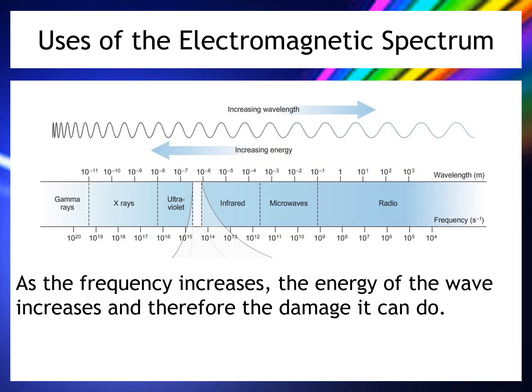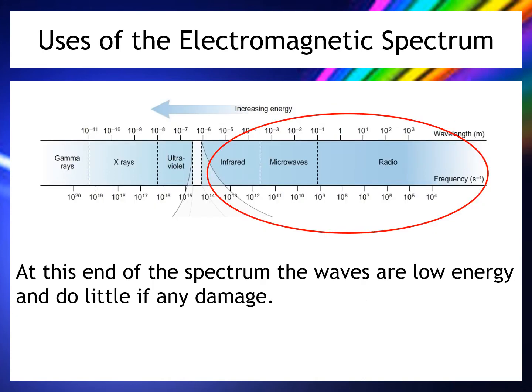Returning to the diagram: as we go towards the left-hand side, we increase frequency and therefore energy. So gamma rays are more dangerous than radio waves because they have more energy, and more energy means more potential damage. At the radio, microwave, and infrared end, the waves are low energy and do very little damage. Infrared is heat energy, so unless you climb inside an oven, it won't cause much harm. Similarly, visible light is unlikely to cause damage unless you stare directly at the sun.